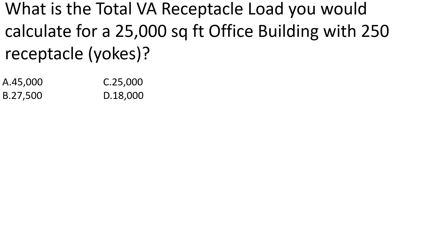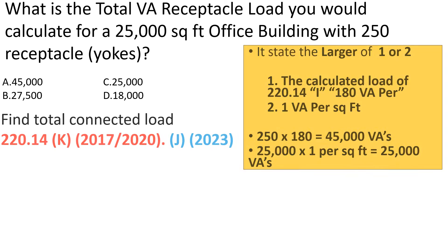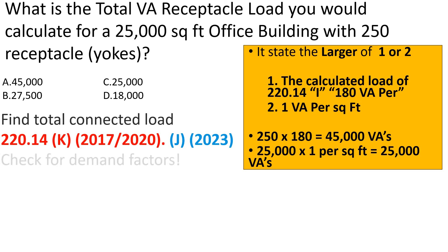What is the total VA receptacle load you would calculate for a 25,000 square foot office building with 250 receptacles? First, find our total connected load. We head to 220.14K if we're in the '17 or '20 code, or 220.14J if we're in the '23 — same information, different name. Both state we must select the larger of two calculations. Part one: calculate at 180 VAs per yoke — 250 receptacles × 180 VAs = 45,000 VAs before demand factors. Part two: calculate at 1 VA per square foot — 25,000 sq ft × 1 = 25,000 VAs. The first part has a demand factor that applies, so we check for demand factors.